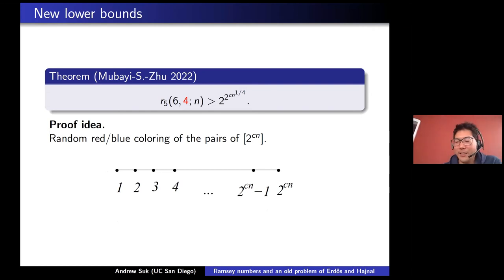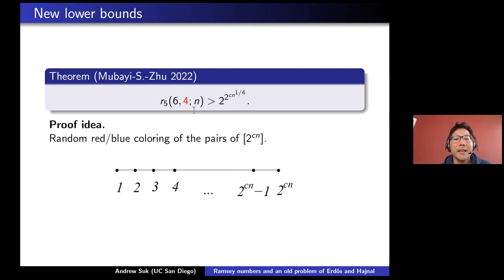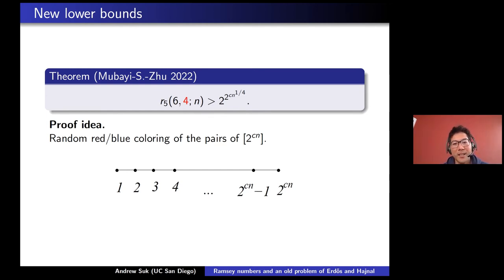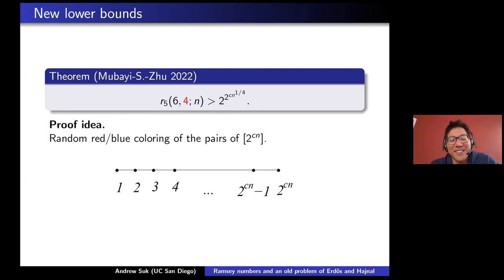Throughout this talk I've been discussing single versus double exponential bounds and trying to find double exponential lower bounds. Now I want to roughly sketch the proof of the double exponential lower bound — or at least start it — just to give an idea of how you might come up with such a bound. The proof is pretty complicated with many patterns to consider, so I'll start it and skip the details at the end.